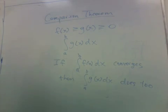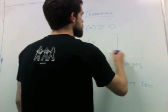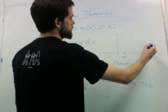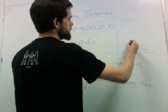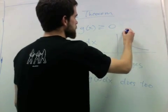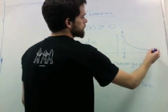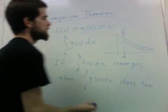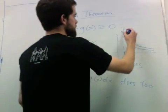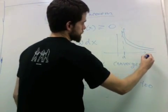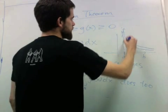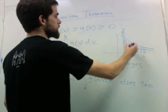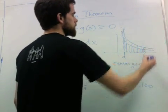And it's not hard to see why. Let's suppose that at a, g is going off to infinity, and so is f, but it's bigger. If we know that the area under f is finite, then certainly the smaller area under g will be finite.